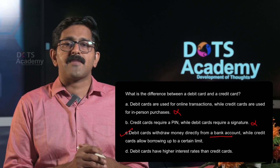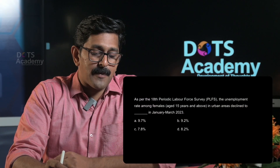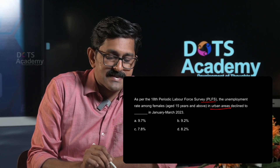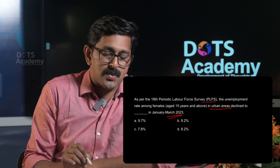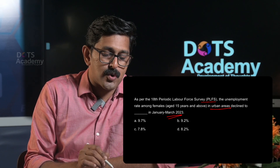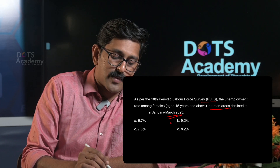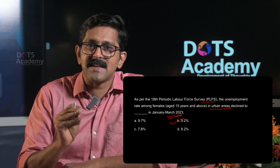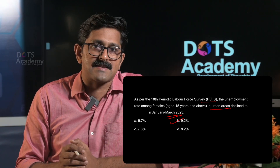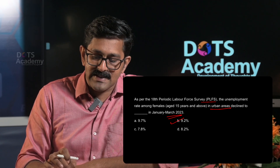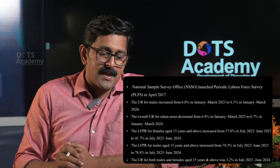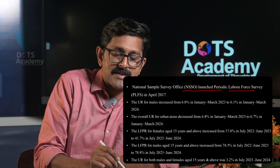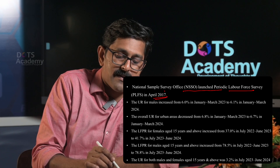As per the 18th Periodic Labour Force Survey, the unemployment rate among females aged 15 years and above in urban areas declined. In January–March 2023: 9.7%, 9.2%, 7.8%, 8.2%. Option B is 9.2%. This is a facts-based question about the PLFS survey, which is conducted by the National Sample Survey Office, launched in April 2017.